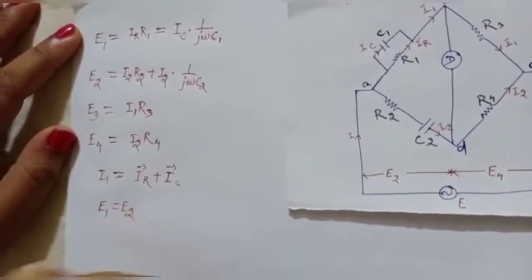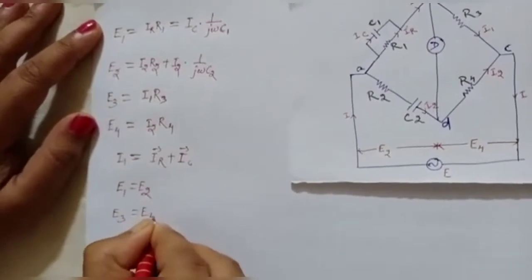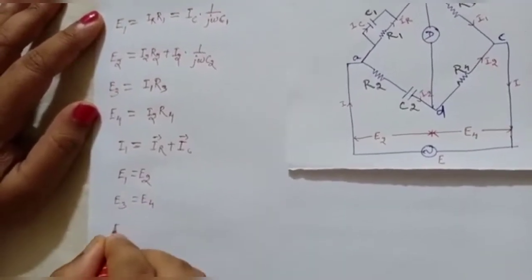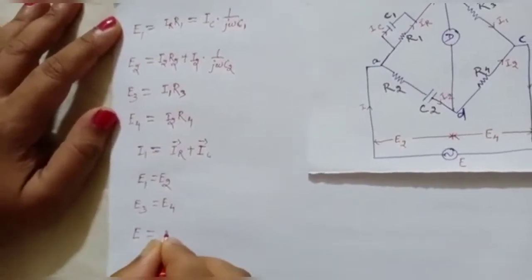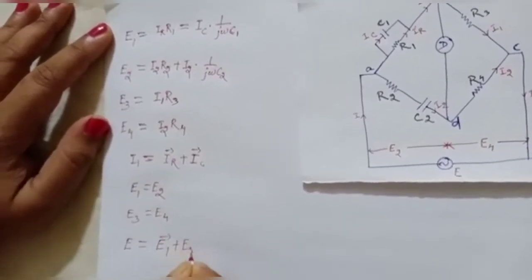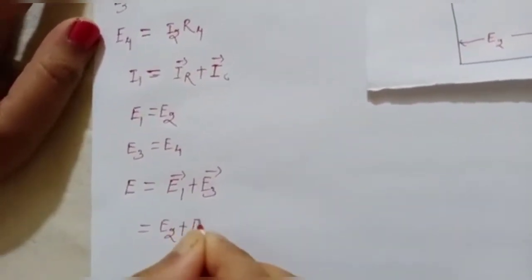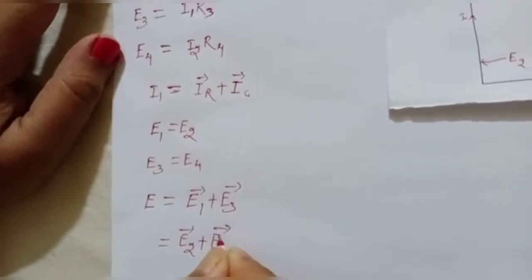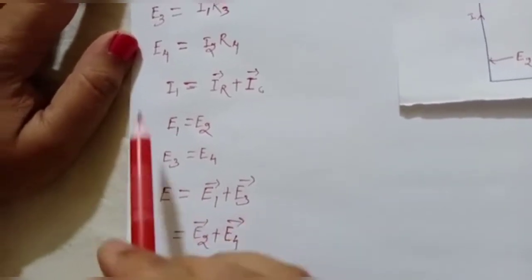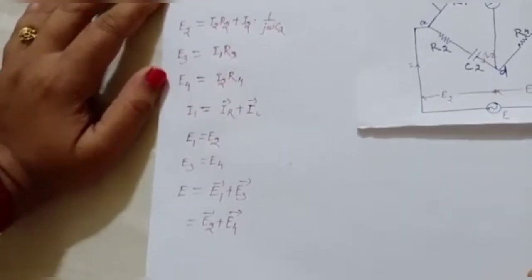At balance condition: E1 = E2 and E3 = E4. The total supply voltage E equals the phasor sum of E1 and E3, or equivalently the phasor sum of E2 and E4. This is the data we need to draw the phasor diagram of Wien's Bridge.